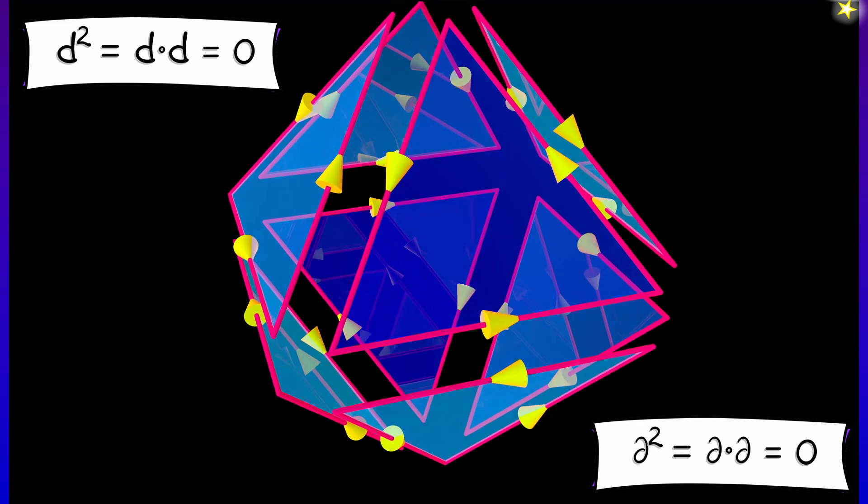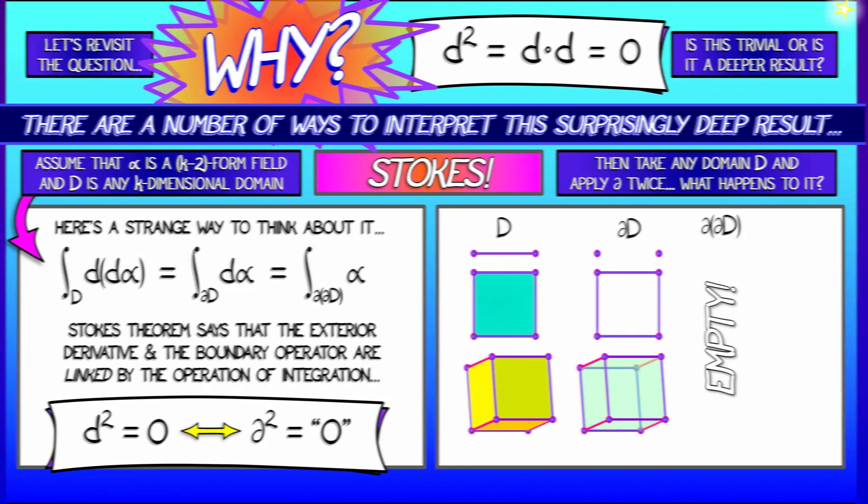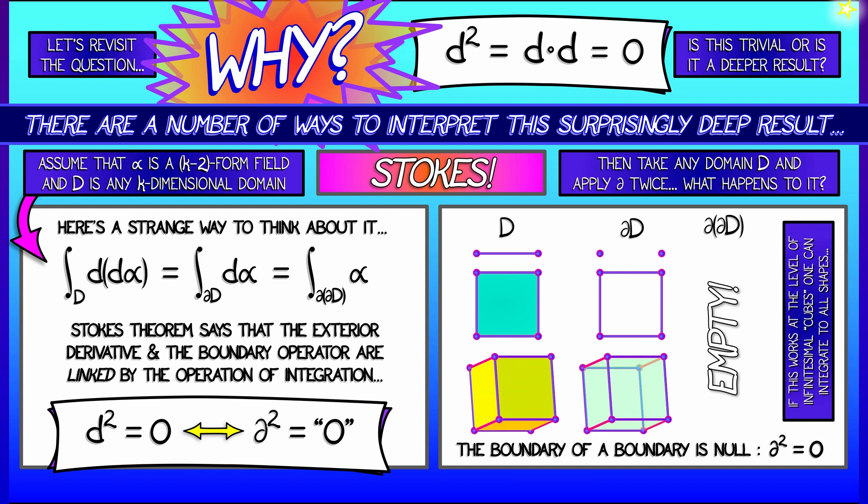And it works at the infinitesimal level. And because it works at the infinitesimal level, you can chain these things up to get it to work in arbitrary, reasonable shapes, the kind of shapes that Stokes' theorem applies to.